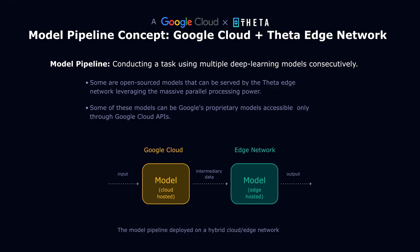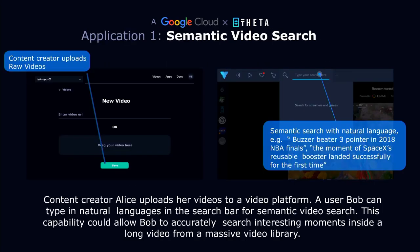A model pipeline allows conducting tasks using multiple deep learning models consecutively. Some of these models can be Google proprietary models offering accessibility through Google Cloud's API. Others can be open-source models served by the Theta Edge network leveraging massive parallel processing power. The input data is first transformed into an intermediary representation using cloud-hosted models, then the intermediary data is processed by models hosted in the Edge network and turned into a final output. Let's use a couple of applications as examples — we'll utilize the video entertainment industry to illustrate its potential. The first application is semantic video search.